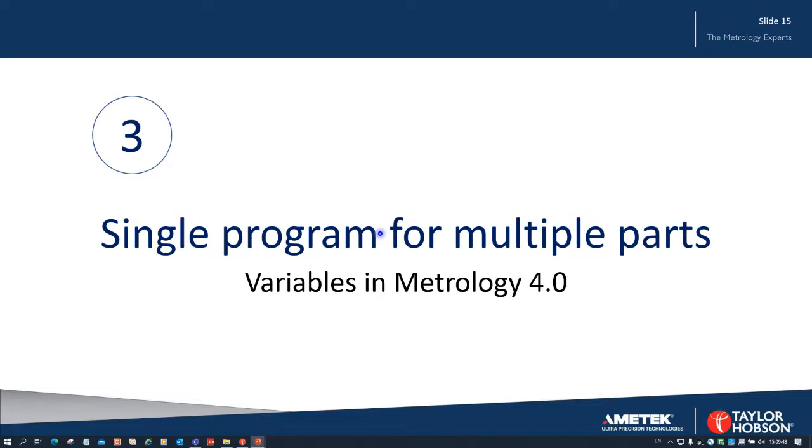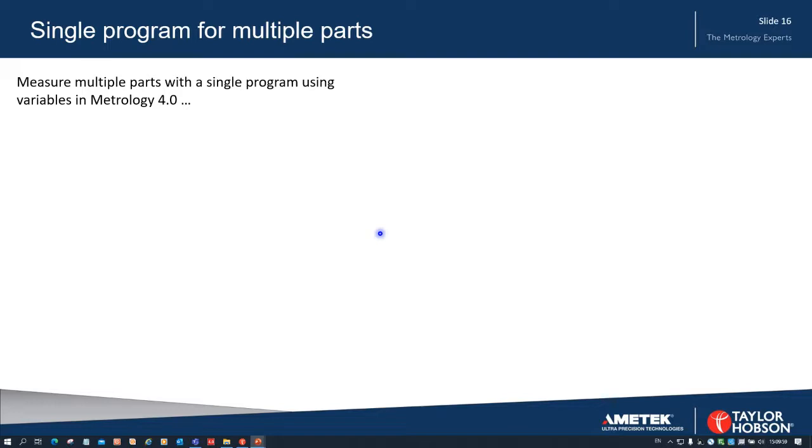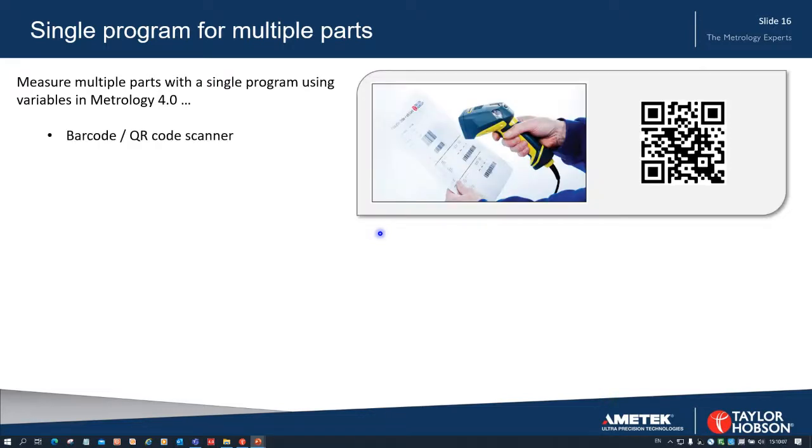That's a very important report. Let's have a look now at how in Metrology 4.0 we can measure multiple parts but just using a single measurement program. And this is done using the ability in Metrology 4.0 to use variables. So when we start the measurement we can scan with a barcode or a QR code scanner, and that will tell us which part that we want to measure, and it will call up the data about the information about the part that we're measuring from the database - from the company database or even from a text file locally on the PC.